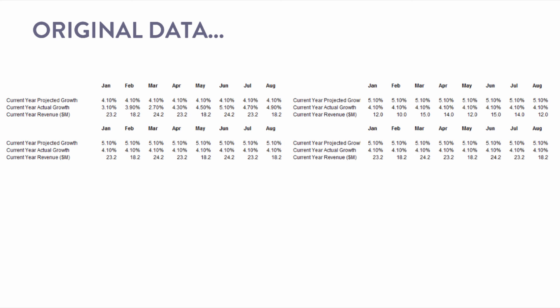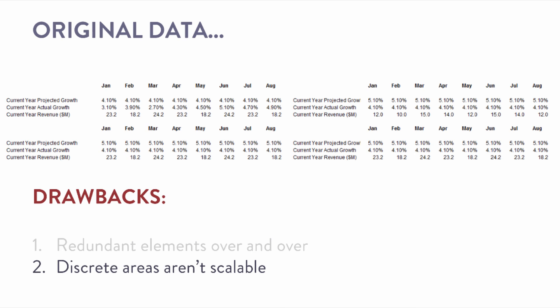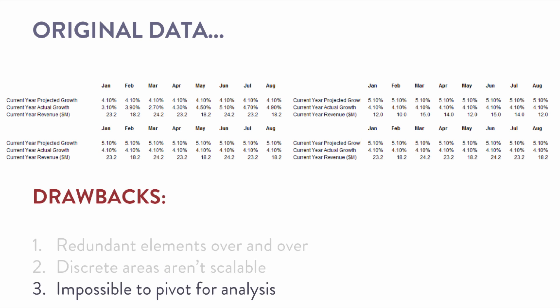Here's a look at the original simplified data and how it was structured. I immediately noticed a few things about the structure that could be improved. There were redundant elements repeated over and over — for every channel the metrics are repeated and they're all split. These discrete areas really aren't scalable; if you continue to add more channels, it's going to get unruly. And if I have a probing question from a stakeholder, this data isn't possible to pivot for further analysis.